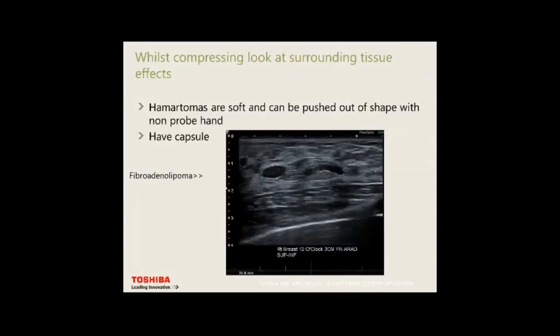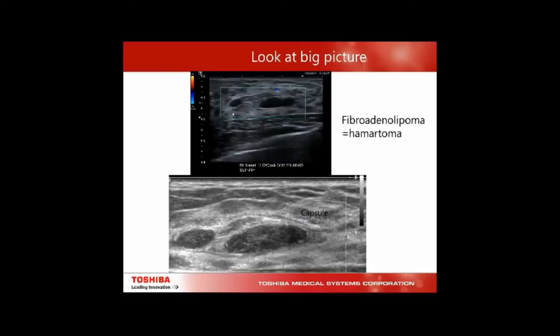While compressing, look at surrounding tissue effects. Hamartomas are soft and can be pushed out of shape with the non-probe hand — they also have a capsule. Hamartomas are fibroadenolipomas: made of normal breast tissue in an abnormal form. This particular hamartoma had previously been described as two fibroadenomas. Always look at the big picture and look for the capsule — we can see the capsule coming all the way around here.